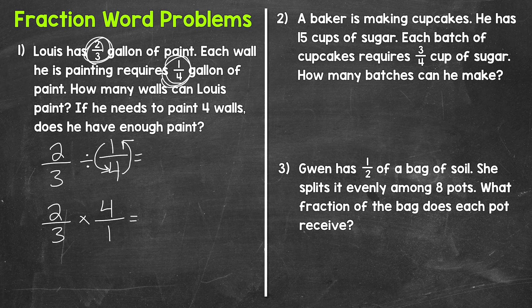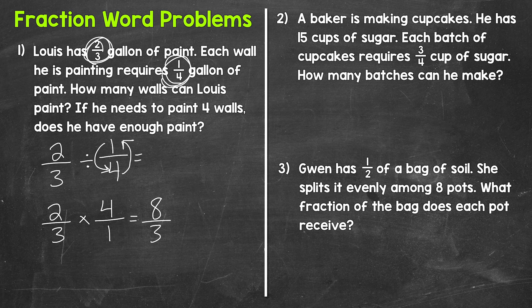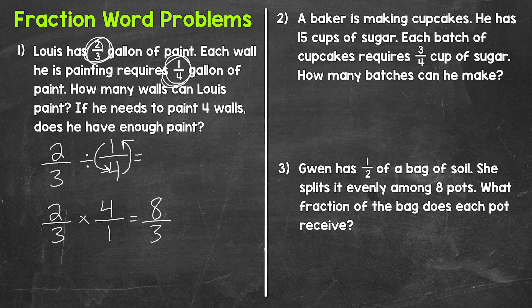Now we can multiply straight across. So the numerator times numerator and denominator times denominator. Two times four gives us eight and three times one gives us three. So we end up with eight-thirds, which is an improper fraction. So let's convert this to a mixed number and we do this by dividing the numerator, eight, by the denominator, three.